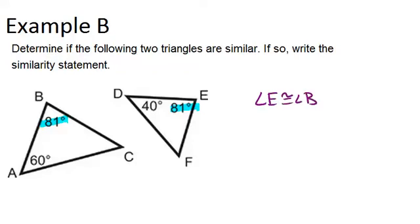Let's find the missing angle in this triangle, angle C. We're going to do 180 minus 81 minus 60, and we get 39 degrees.